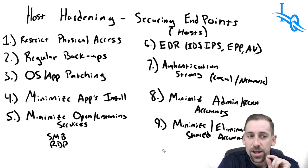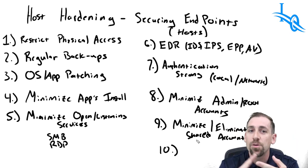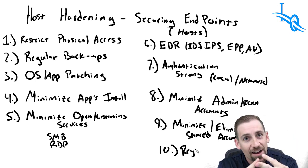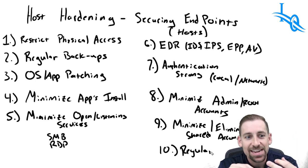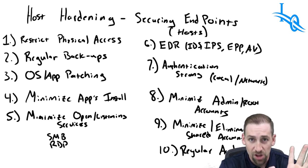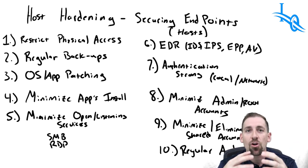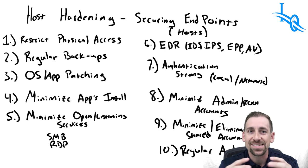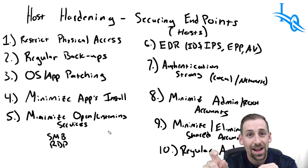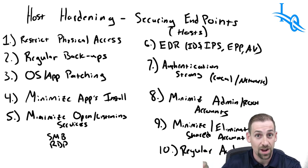And finally, number ten is regular auditing of all of the above: account permissions, current configuration versus baseline, physical security, physical penetration testing, logical penetration testing. Regular auditing of all of these systems is extremely important to make sure that we are compliant with what we were trying to do in steps one through nine.